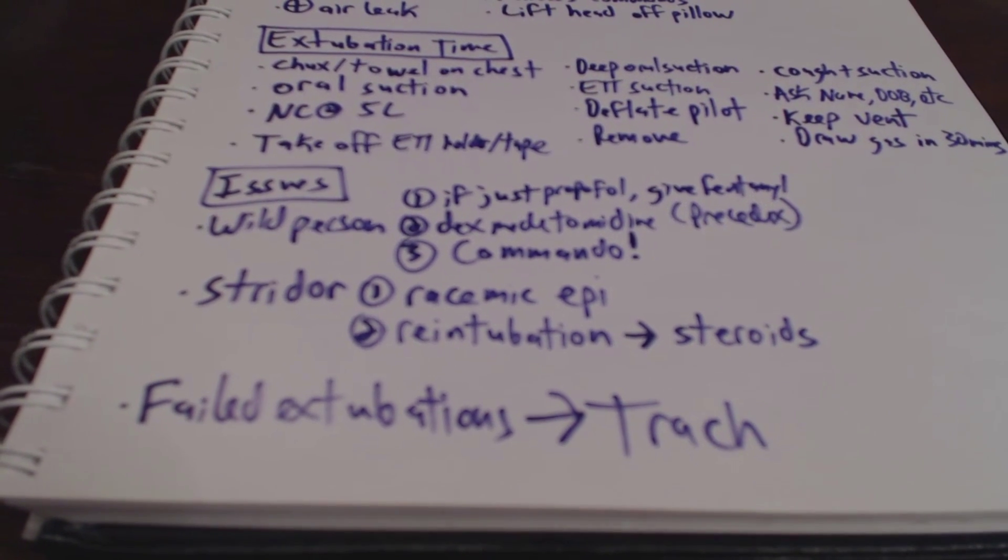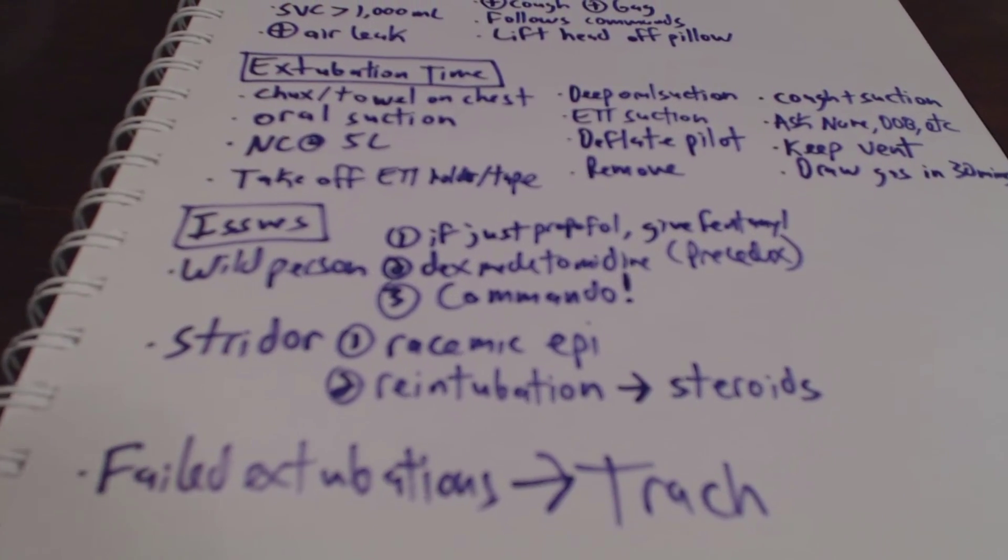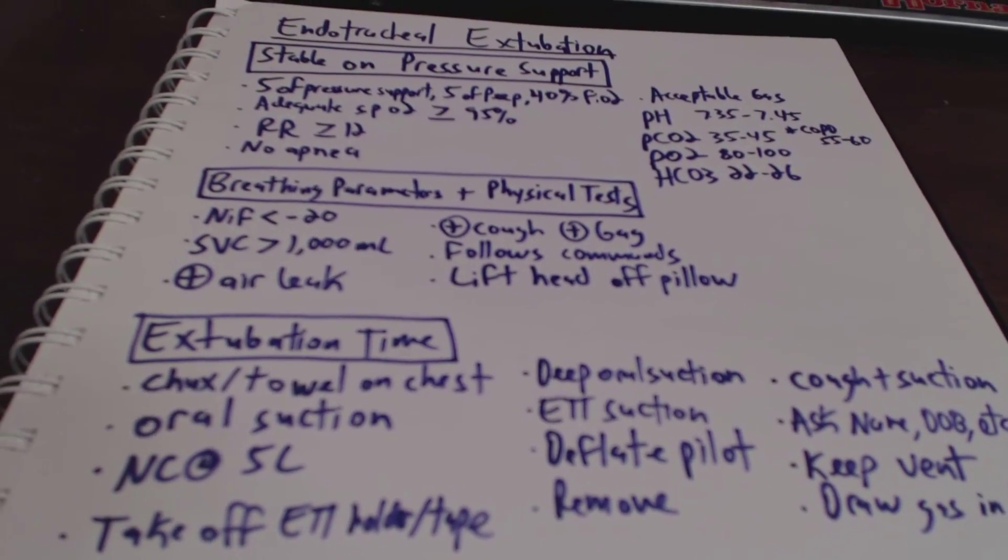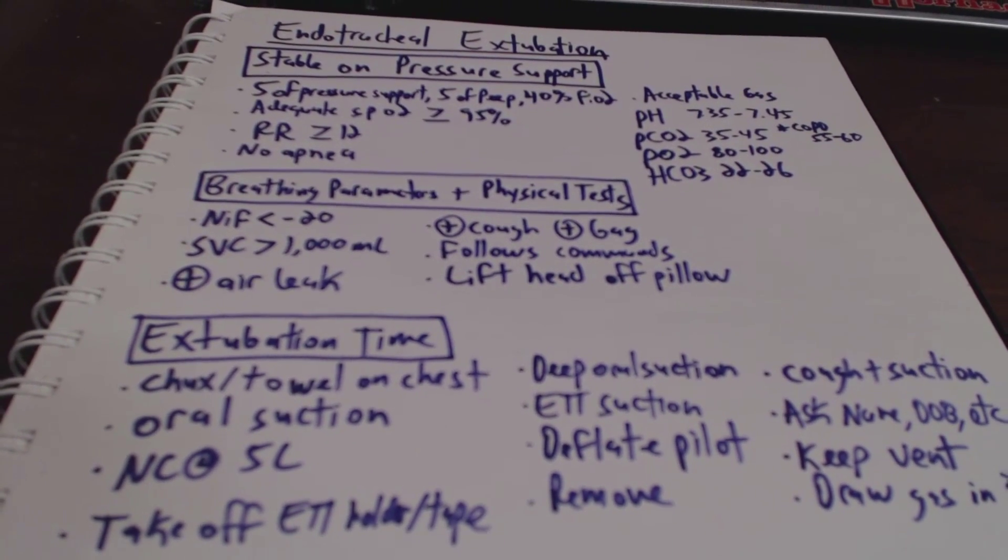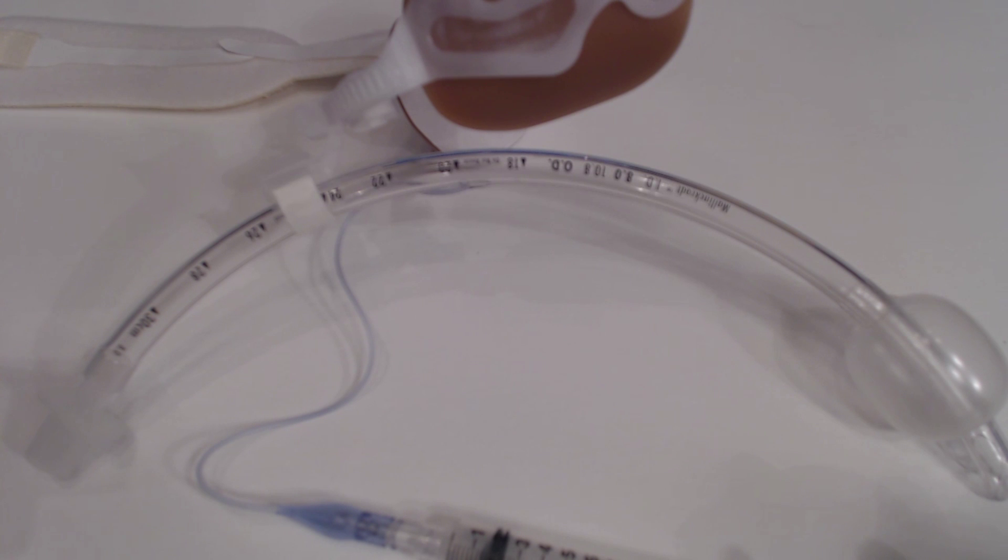All right, and that concludes all of the things that we're going to have to get prepared for when we're going to be doing an endotracheal extubation. Okay, so here we have a standard endotracheal tube. It's an 8 centimeter tube and also the endotracheal tube holder.